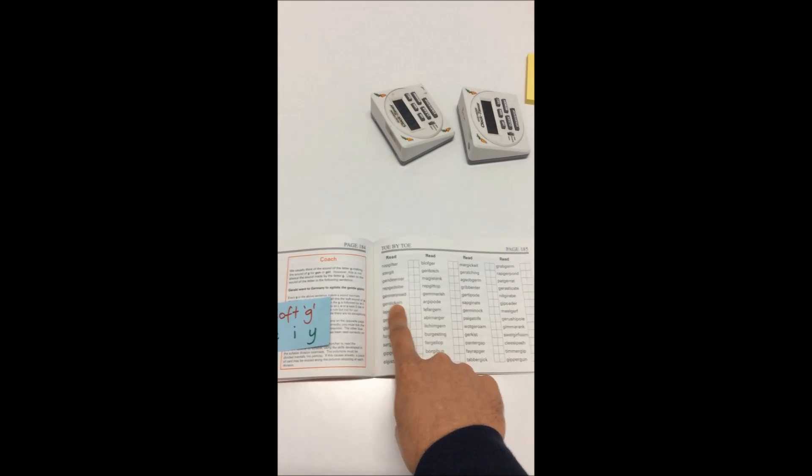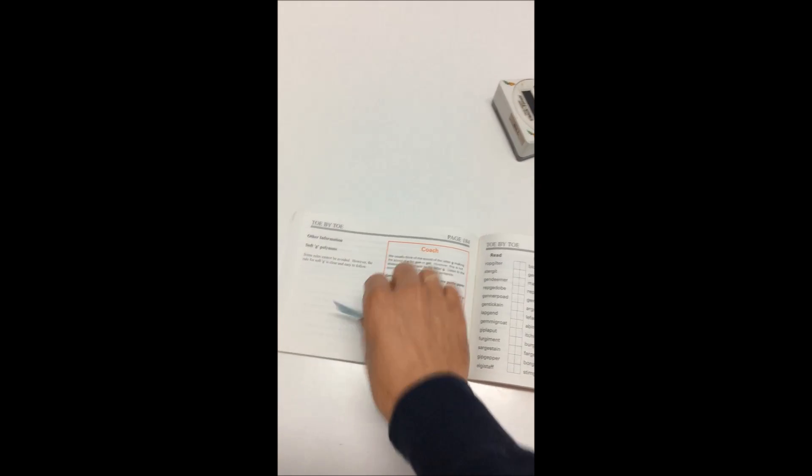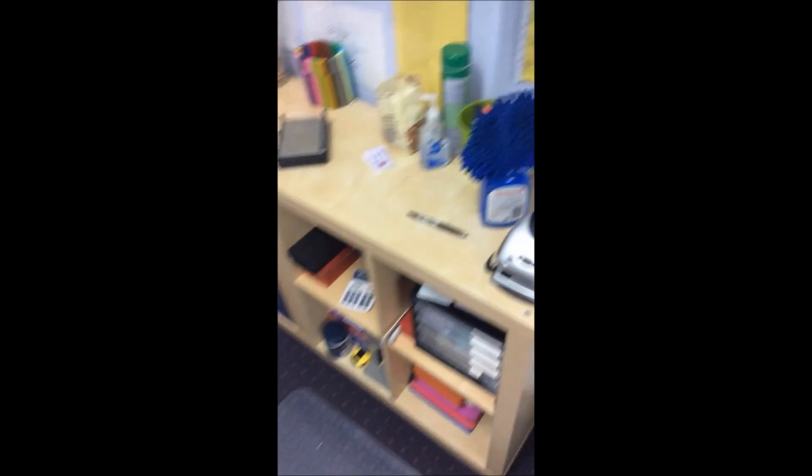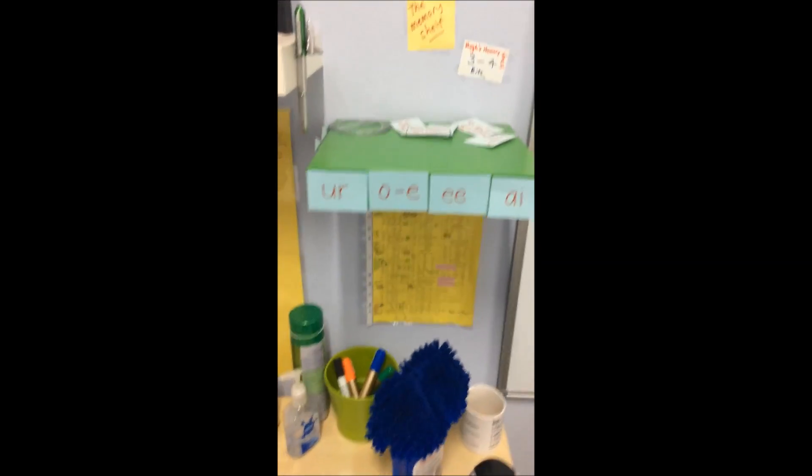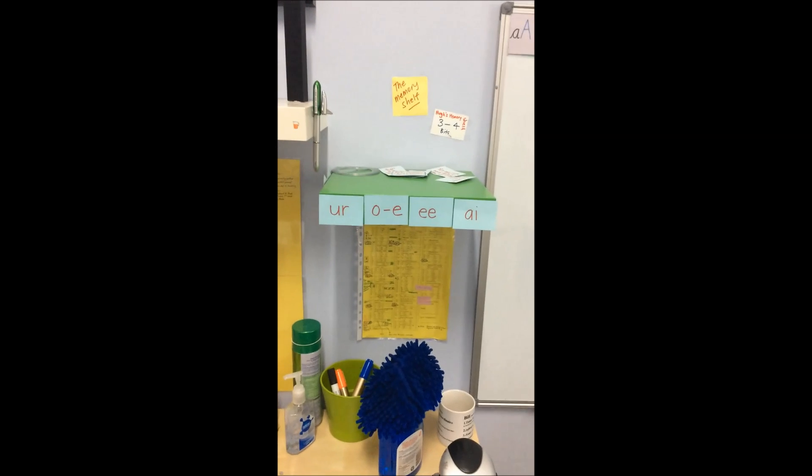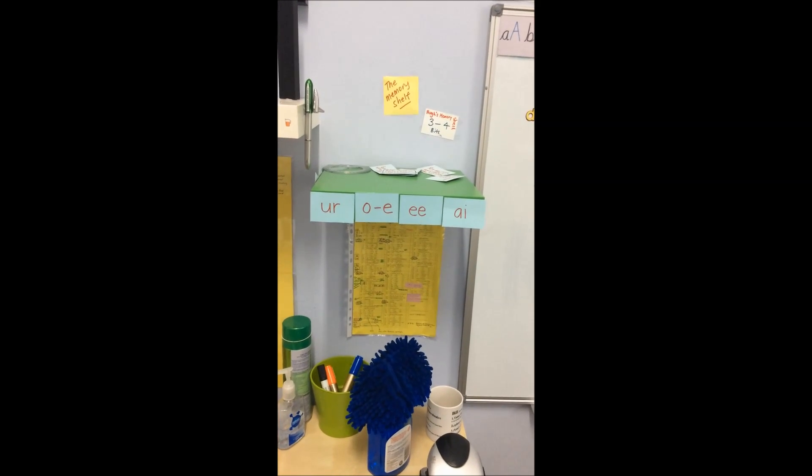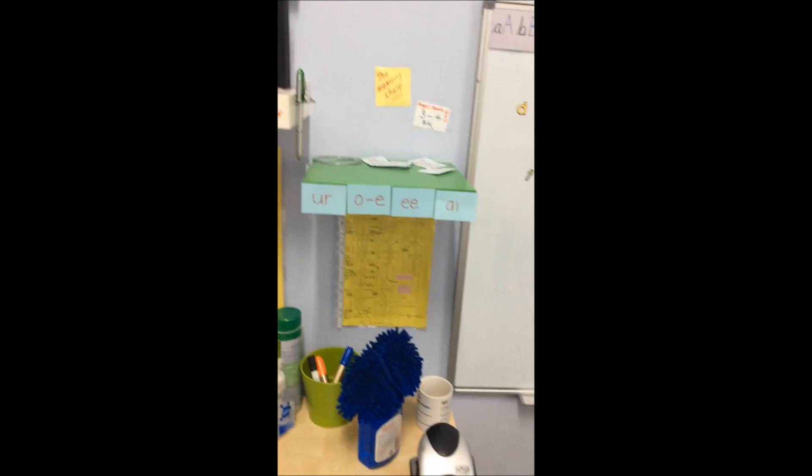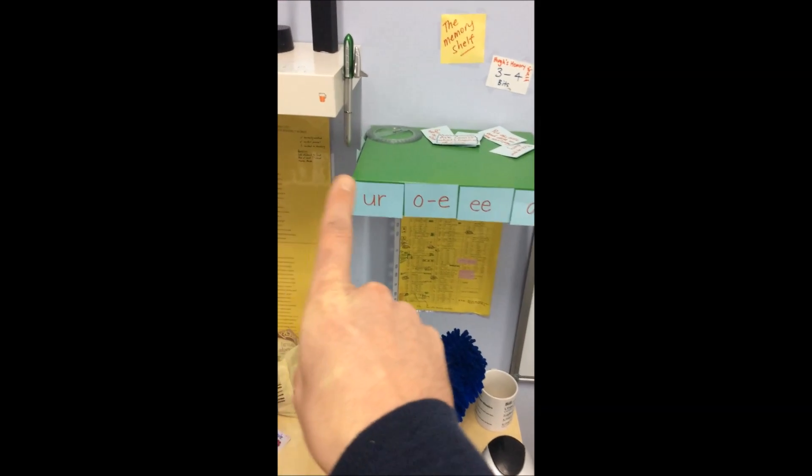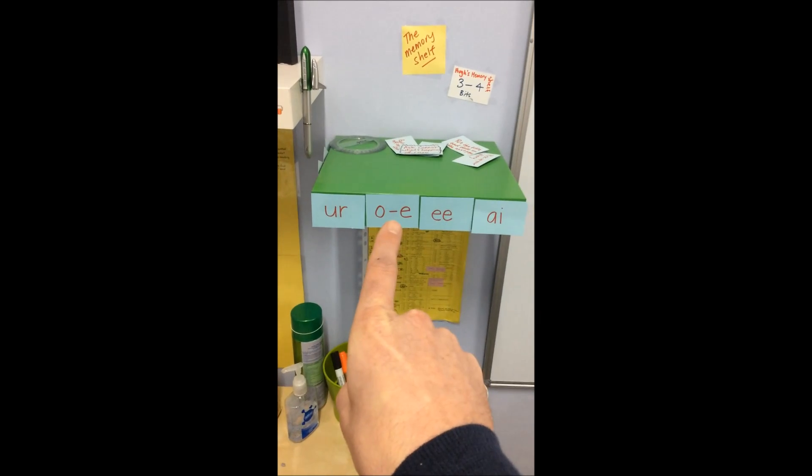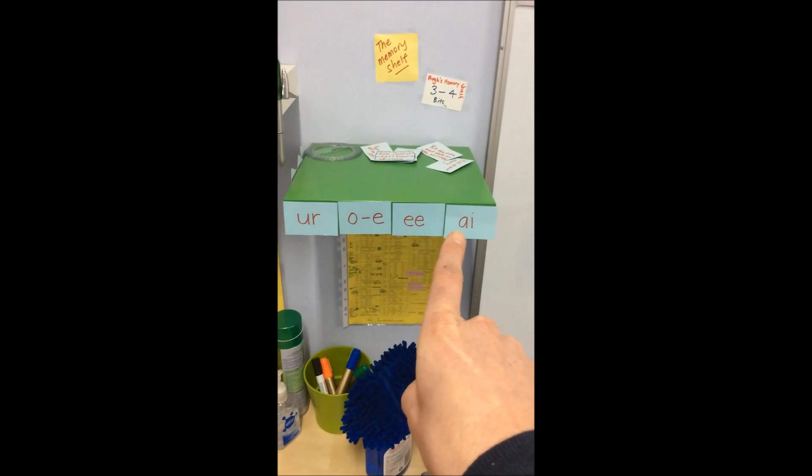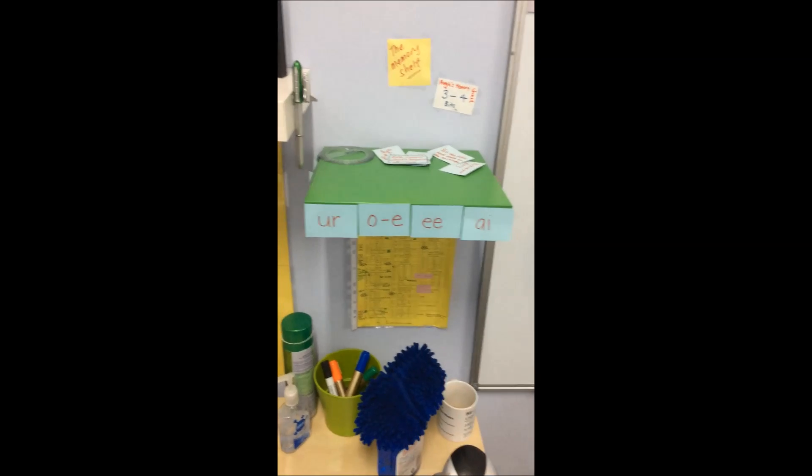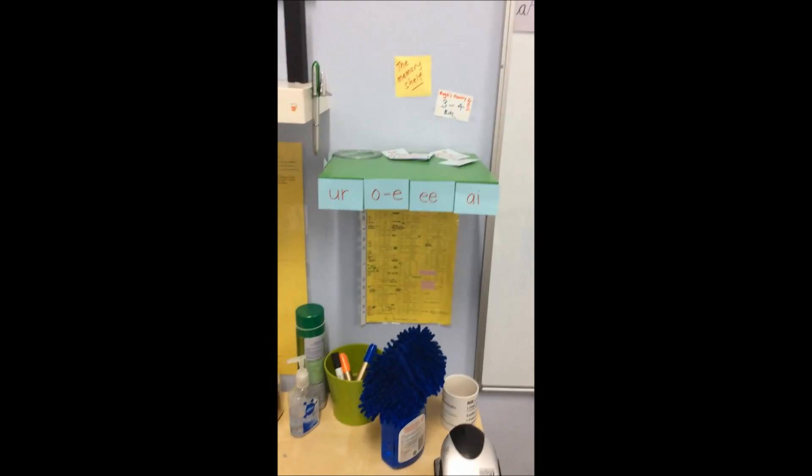So we stopped there and I said, Charlie, you need to know what's going on in your memory at the moment. So we went to Hugh's memory shelf and I asked Charlie, over the last few pages of Toe by Toe, what has your working memory had to do with? And he identified that U-R to spell E-R, O consonant E to spell O, double E to spell E, and AI to spell A were new ideas or new things that we were practicing.